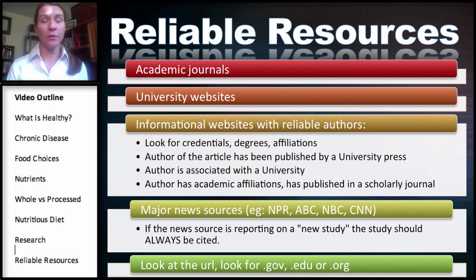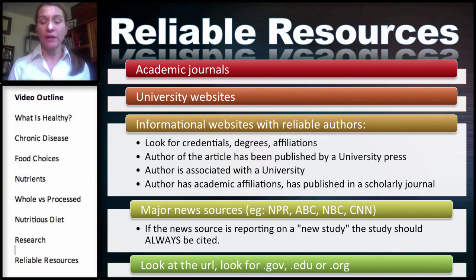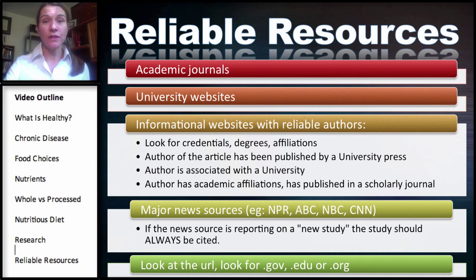When we think about a reliable resource, any of the academic journals are generally peer-reviewed. This is important because it means that people in their field of research are reviewing the work, not somebody who's not in that field. So as soon as you have a peer-reviewed process, you're going to increase the reliability of that resource. Most university websites are very good resources as well, because there is just a natural peer-review process built in.